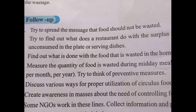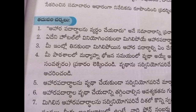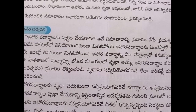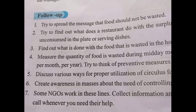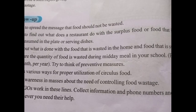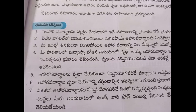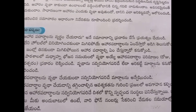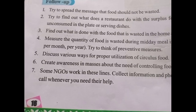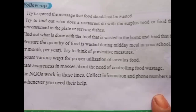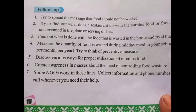Five: discuss various ways for proper utilization of surplus food. Six: create awareness about the need for controlling food wastage. Seven: some NGOs work in these areas — collect their information and phone numbers and make a call whenever you need their help.